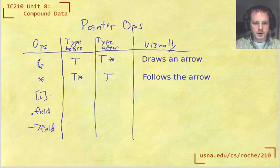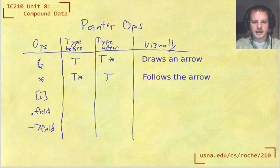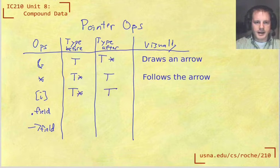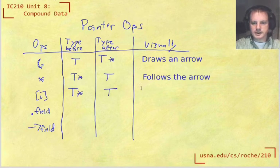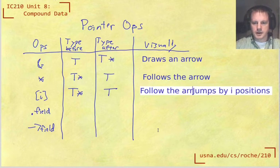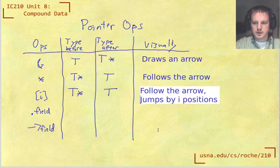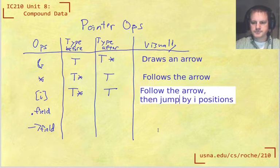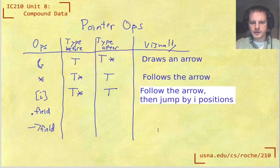Okay, so moving on, what about this index operator? Well, it's kind of related to the dereference operator, but with the index as well. So the types stuff is going to be the same. And what this does is two things: we follow the arrow, then jump by i positions. And that's what this operator does, the index operator.